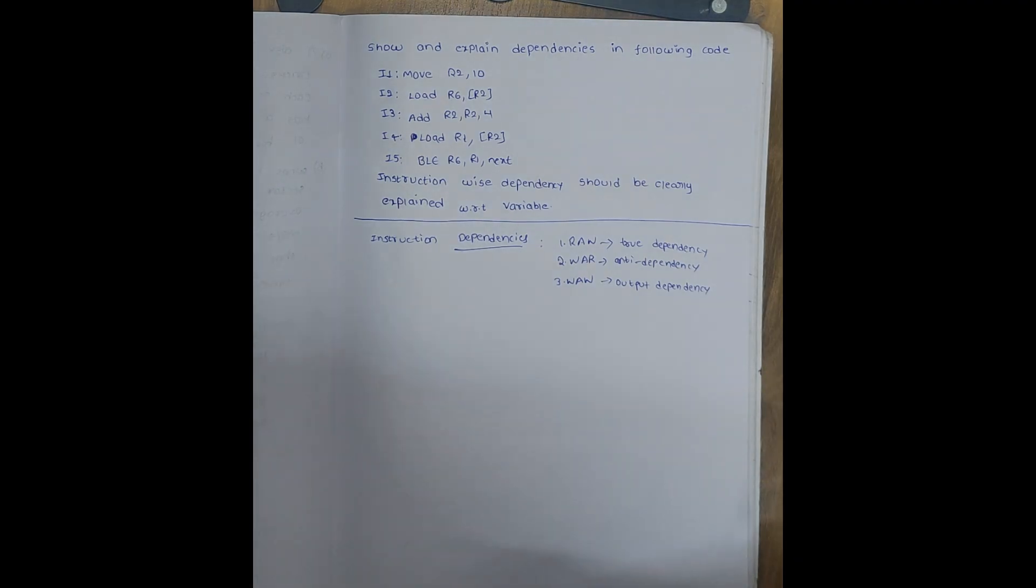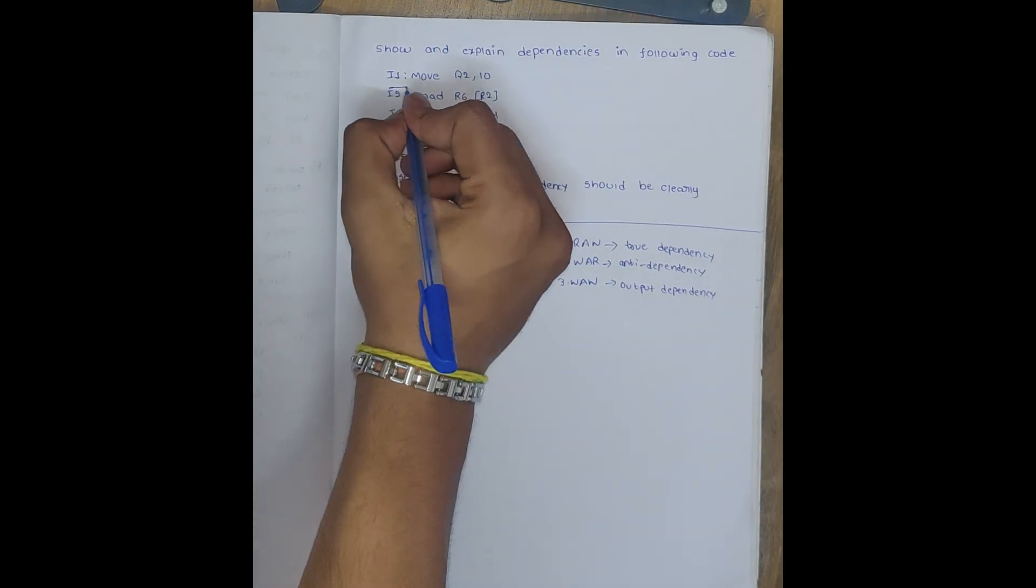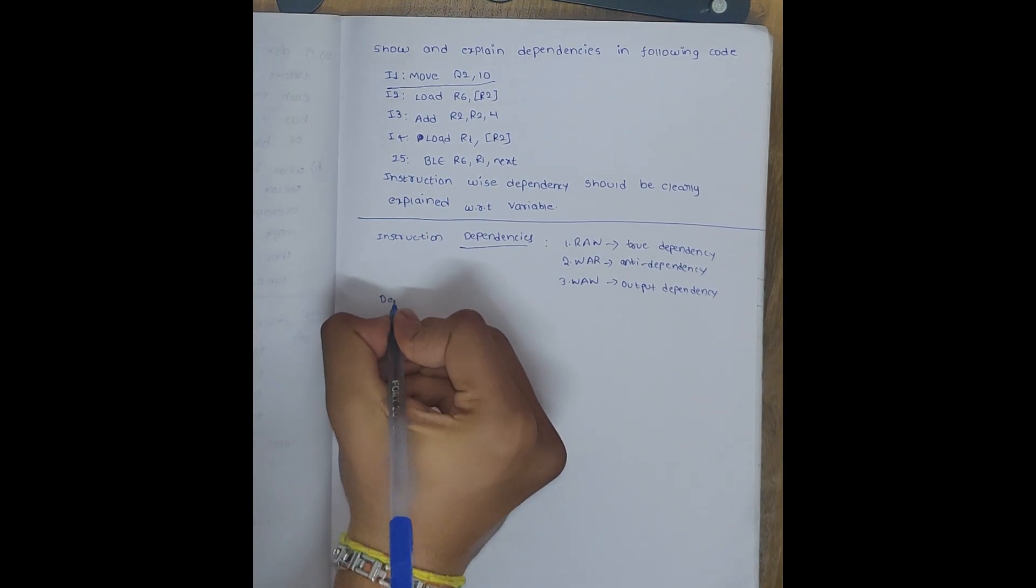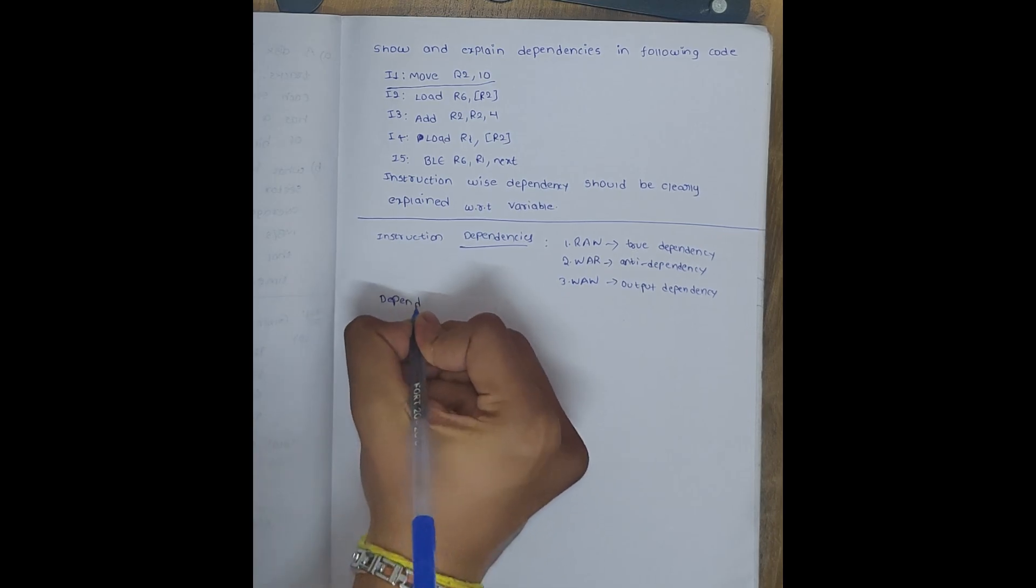So here we are mainly focusing on RAW dependencies for this question. What is the first instruction? MOV R2, 10. Now I will be explaining this question by comparing it with daily life as well. First dependency: